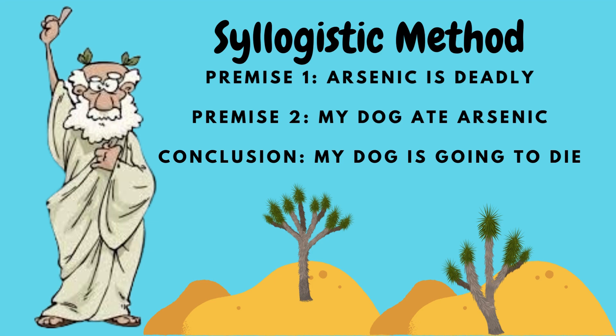Aristotle created a heuristic called the syllogistic method. It works like this: you create a mathematical formula going from premise one, premise two, to the conclusion. If I say premise one — arsenic is deadly — followed by premise two — my dog ate arsenic — we naturally conclude that's not going to bode well; the dog's going to die. Aristotle would call that a cogent argument — lockstep, bulletproof, logically infallible. When our students write, we want that degree of precision in their lines of reasoning. I'll interchange 'cogency' and 'line of reasoning' throughout the rest of this presentation.